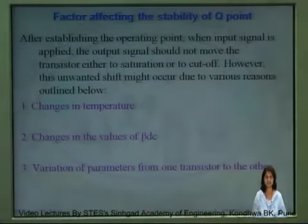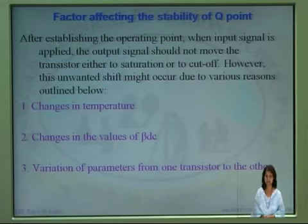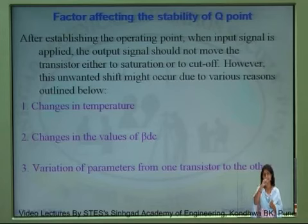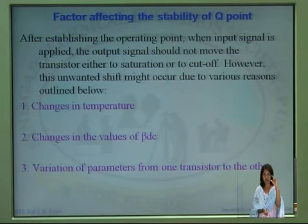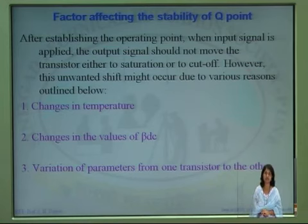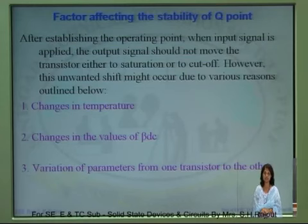The next point of discussion is factors affecting the stability of the Q point. If the Q point is stabilized on a DC load line on the output characteristics curve with the help of points A and B, then if there is a change in the input signal and the output signal causing the Q point to shift towards the cutoff region or towards the saturation region, that is called the stability of the Q point being affected.